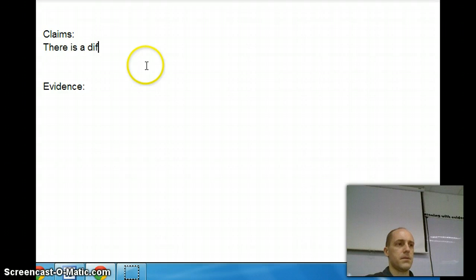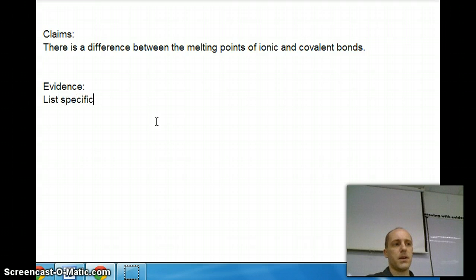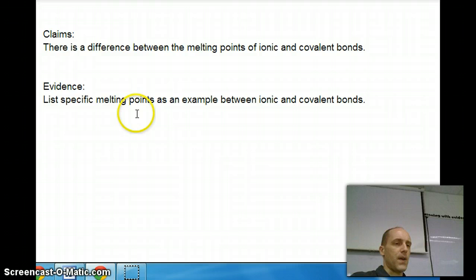There is a difference between the melting points of ionic and covalent bonds. So that would be your claim. The evidence is, then, you want to go to specific melting points as an example. So those match up. You make a claim and then you back that up with evidence.